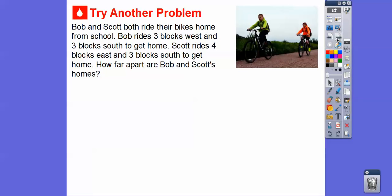All right, so Bob and Scott ride their bikes home from school. Bob rides 3 blocks west. So imagine here's the starting point. Bob rides 3 blocks west. West is to the left. And then 3 blocks south. And then Scott rides 4 blocks east and then 3 blocks south. So how far apart are Bob's house, which is over here, and Scott's house, which is right there?